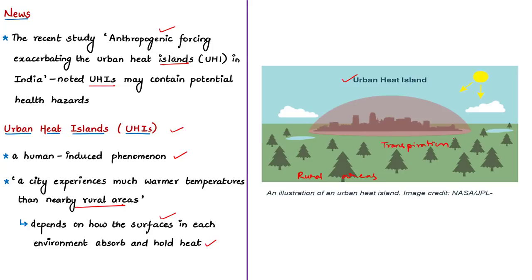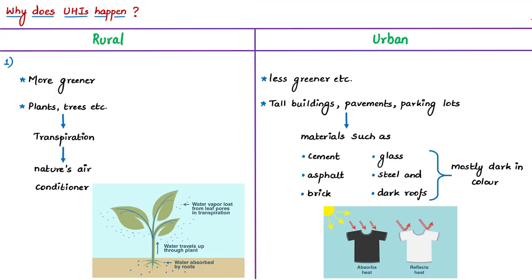Plants take up water from the ground through their roots, store it in stems and leaves, and the water eventually travels to small holes on the underside of leaves. Through these holes, liquid water turns into water vapor and is released into the air. This process is called transpiration, and it acts as nature's air conditioner, making the environment cool.